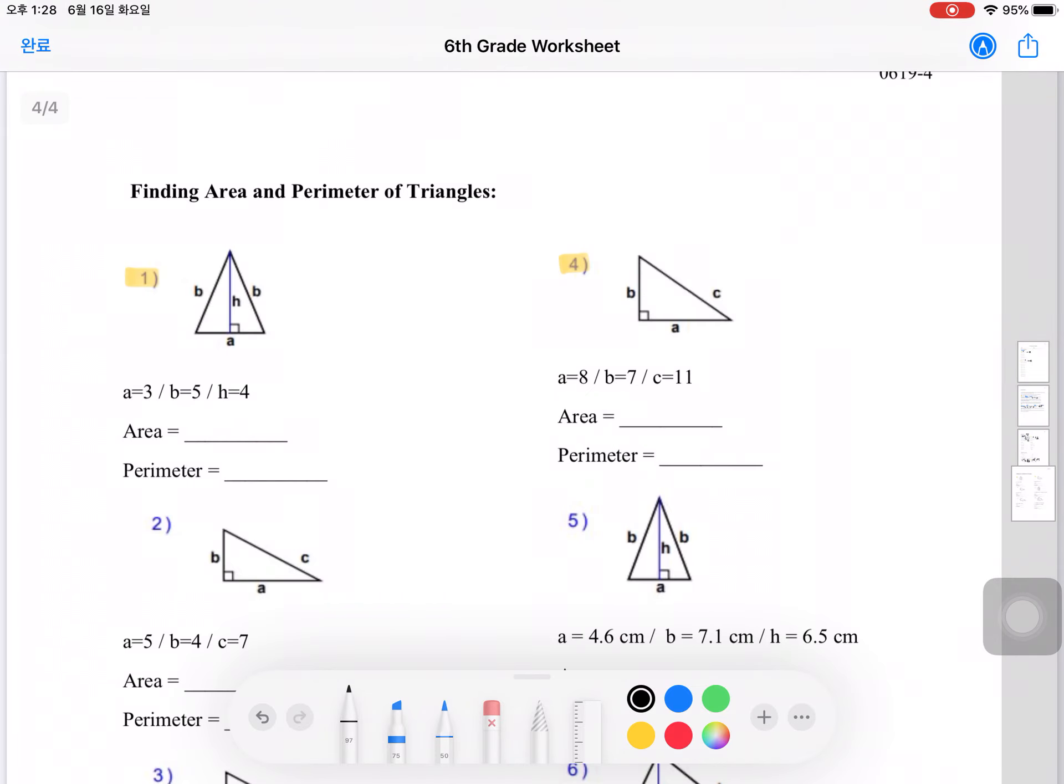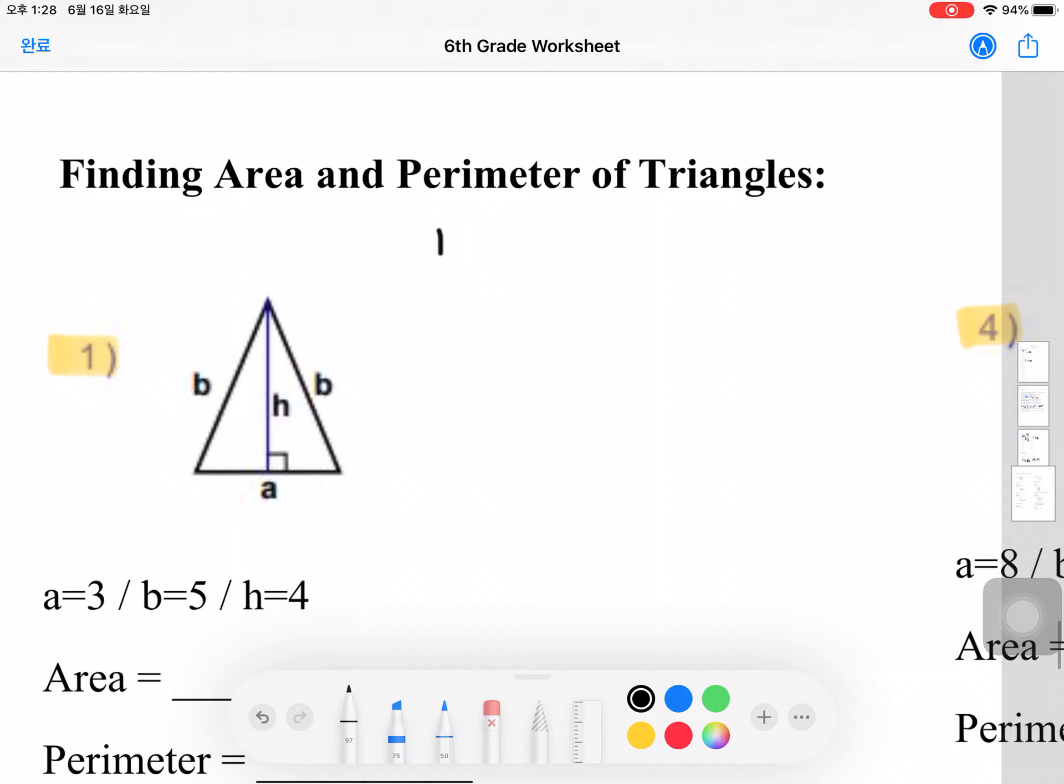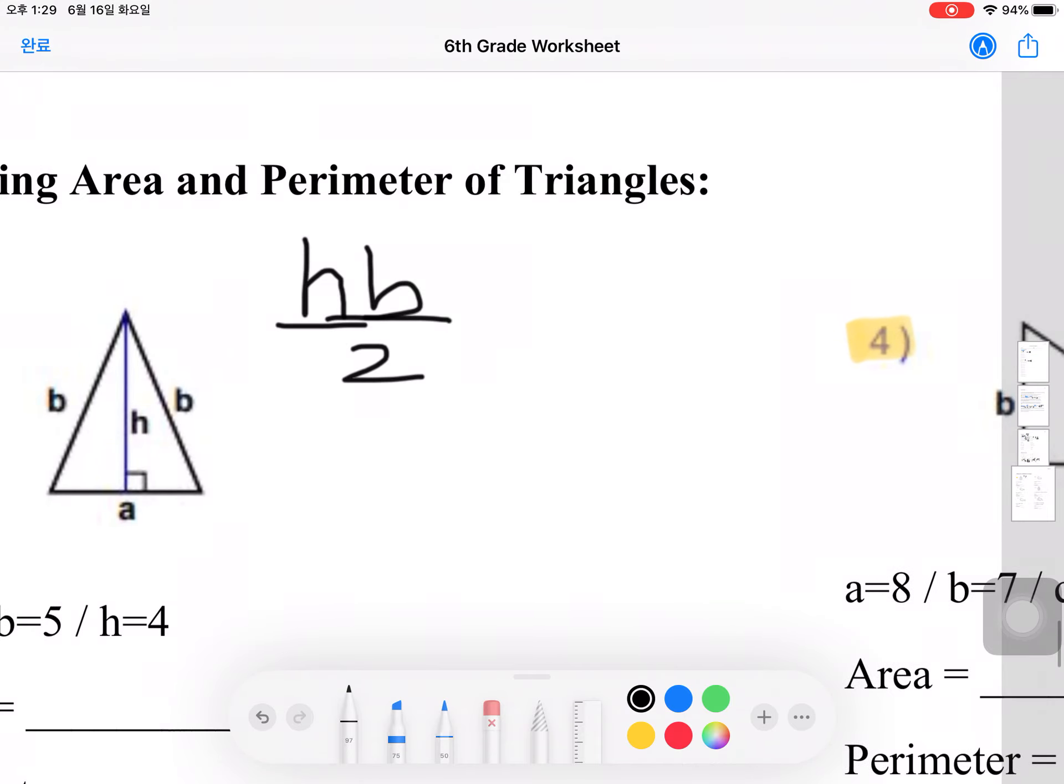Let's go on to the last section, which is finding the area and perimeter of triangles. Here's some things to remember. To find the area of a triangle, you do the height times the base divided by 2. And to find the perimeter, it's just all the sides added together.